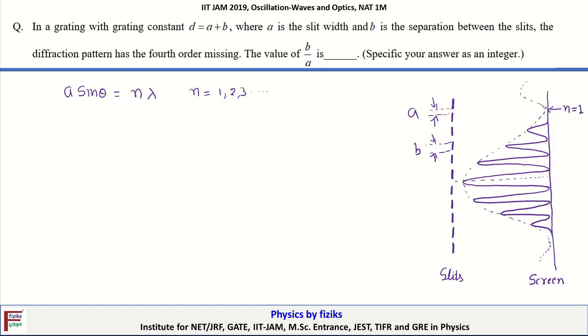The mathematical condition for the interference maxima we can write as: (a plus b) times sin theta equal to m lambda. This m can take values from 0, 1, 2 or any integer values, where the central maxima corresponds to m equal to 0, the first maxima corresponds to m equal to 1.